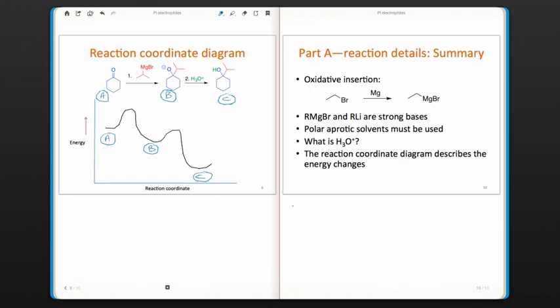So in summary from part A, you saw that we can perform an oxidative insertion of an alkyl halide to give us a Grignard reagent. We saw that Grignard reagents and organolithium reagents are strong bases. And because of that, polar aprotic solvents must be used, and we have to make sure there's no water anywhere nearby when we do the reaction in the lab.